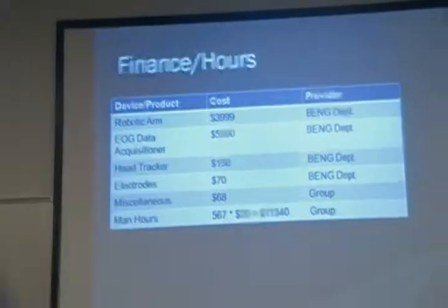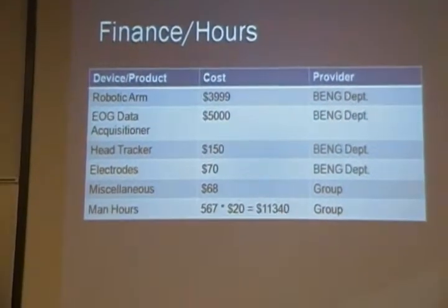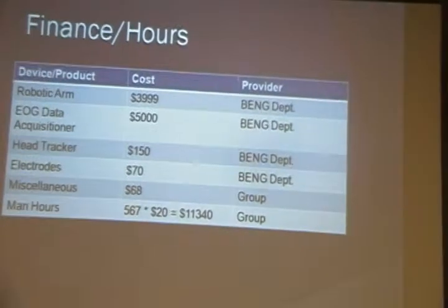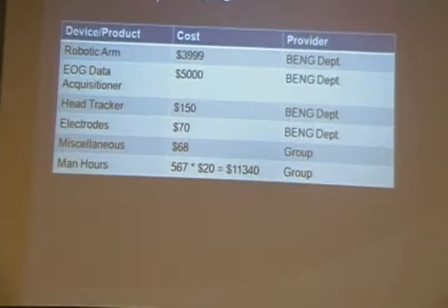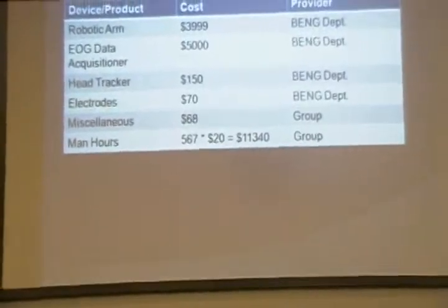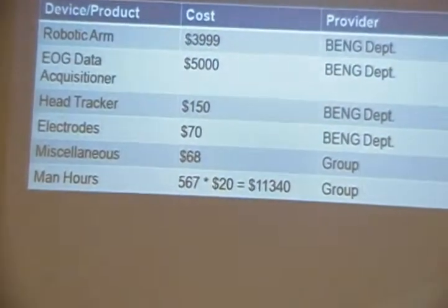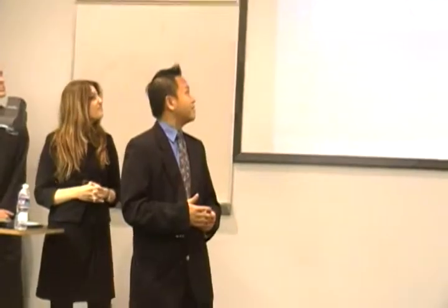Here are our man hours and finances. Most materials for this project were provided by the bioengineering department — the robotic arm, the bioradio, and the head tracker, which was the most expensive part. We also spent money on some other items. As a group, we worked 567 hours, which at a loaded rate came out to about $11,000. The total expense of this project is around $20,000. Regarding work division, me and Tony were responsible for the EOG signal and head tracker inputs, while Joao was responsible for data integration and the robotic arm. We also did a lot of work together as a group. Here are our references, and we are open for questions.